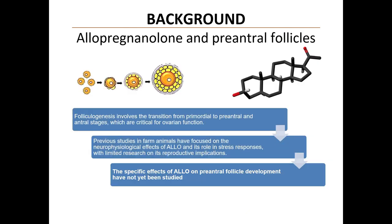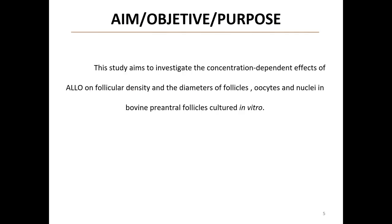The correct transition from primordial to preantral and antral stages is critical for ovarian function. While previous studies have focused on neurological effects of Allo and its role in stress, there is limited research on its reproductive implications. The aim of this study is to investigate the concentration-dependent effects of Allo on follicular density and the diameters of follicles, oocytes and nuclei in bovine preantral follicles cultured in vitro.